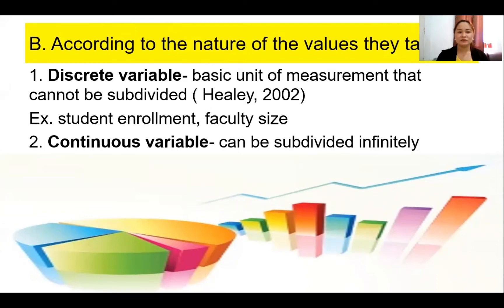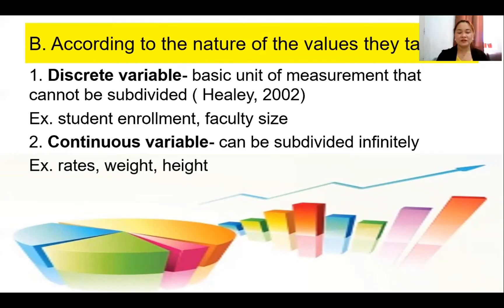The second is continuous. A continuous variable can be subdivided infinitely. Examples include rates, weights, heights, and many other variables.